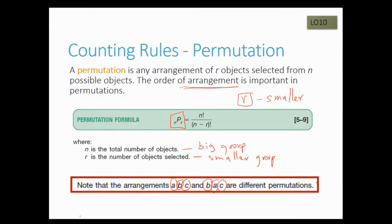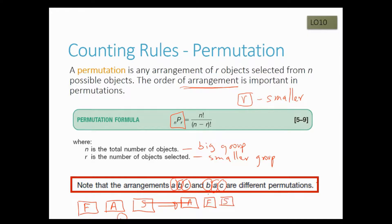For example, imagine three friends in the back of your car: Fatima at one window, Amal in the middle, and Salama at the other window. If they get out and come back in differently — say Amal at the window, Fatima in the middle, Salama at the other side — that's a different grouping. Each time they rearrange, it's a new permutation. In combinations we don't care about the order; in permutations we do.